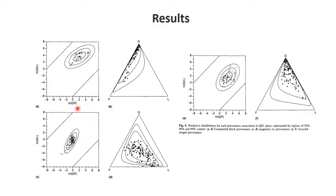Plotting the ALR log ratios for each provenance group — provenance A, B, and C — we obtain point clouds that are more linearly distributed, as expected from correlated data. We fit multivariate normal distributions to each group, accounting for outliers. For this case, we get a pretty good fit to the normal distribution, and transforming back to ternary diagram space also shows a good fit.